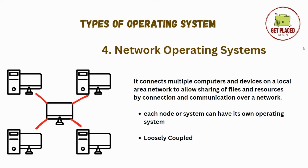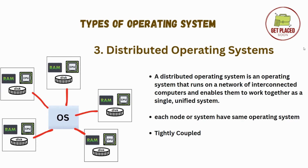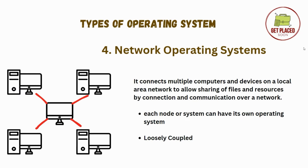Moving ahead, we have network operating system. This might look similar to distributed operating system, but no — network operating system connects multiple computers and devices over a local area network. It allows sharing of files and resources by connection and communication over a network. In distributed operating system, there is only one OS and all the computers share the same OS.